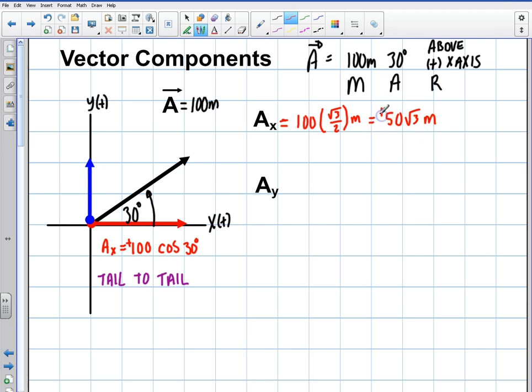Positive, right? So this value right here is, we know, that's 50 root 3 meters in the x.